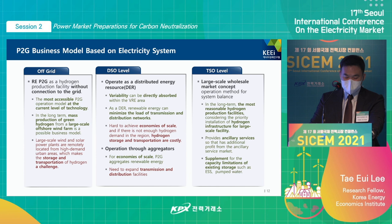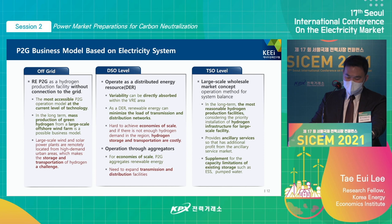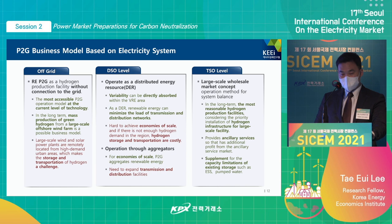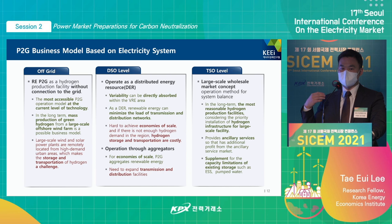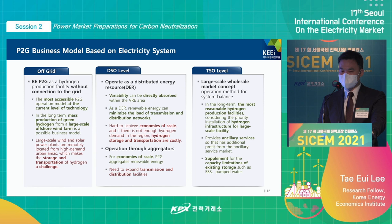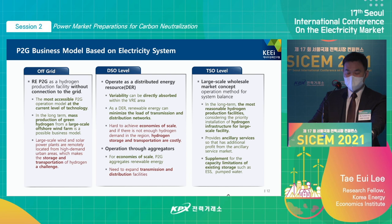We have P2G business models based on the electricity system. One of them is an off-grid project. In the long term, they can be connected to offshore wind farms. But if the hydrogen production site is located far from where hydrogen must be supplied, there could be problems. You also need to consider the size of hydrogen production facilities. If people can become self-sufficient in hydrogen use, there will be no problem. However, considering the general situation, it is difficult to achieve economies of scale with hydrogen.